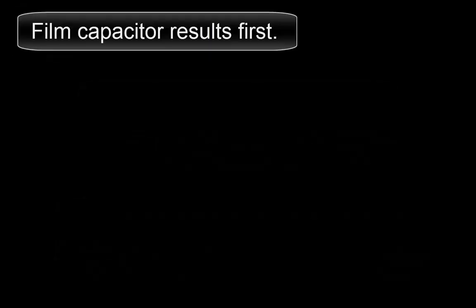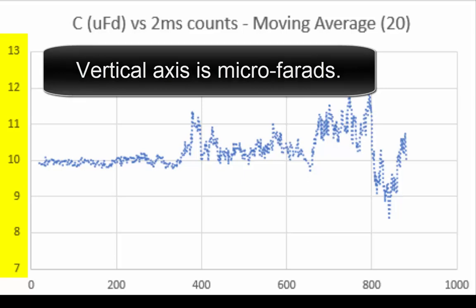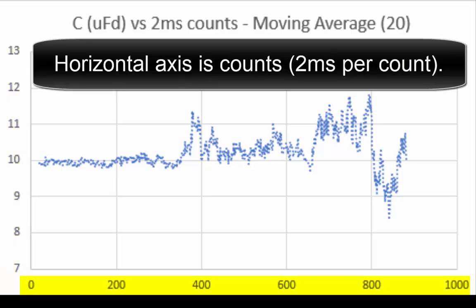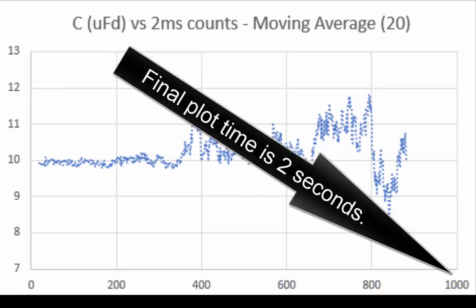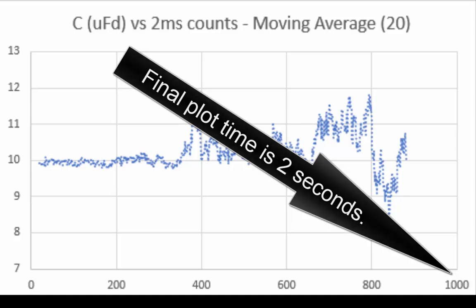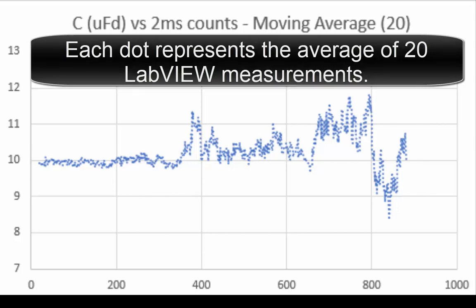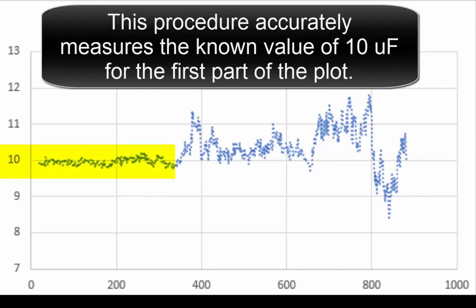Here are the film capacitor results first. This is an Excel spreadsheet showing the measured value of C. The vertical axis is microfarads. The horizontal axis is counts, in this case 2 milliseconds per count. The final plot time is 2 seconds. Each dot represents the average of 20 LabVIEW measurements. This procedure accurately measures the known value of the 10 microfarads for the first part of the plot.